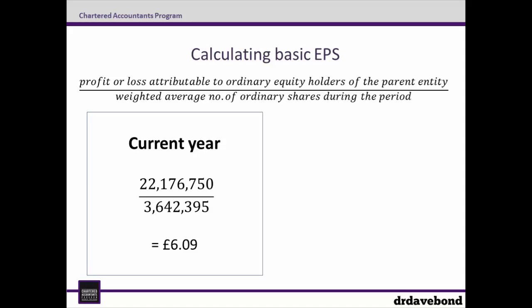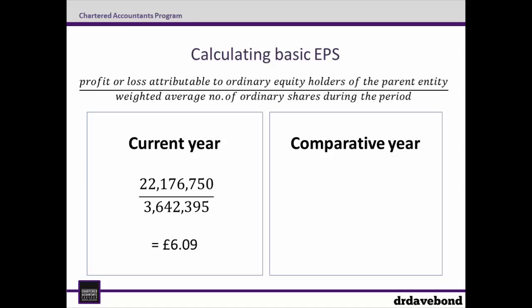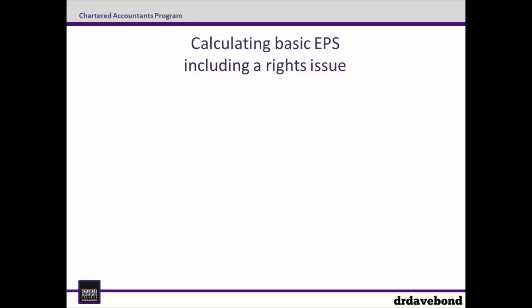Because of the rights issue, we also need to restate the comparative EPS for last year, which was originally £5.69. To restate, we divide the original by the rights adjustment factor, which gives us a restated comparative EPS of £5.37. And that's calculating basic EPS including a rights issue.